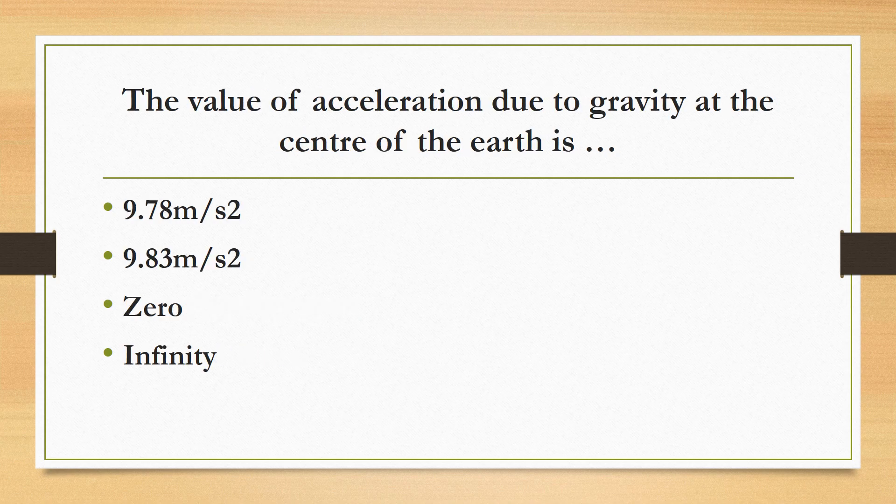The value of acceleration due to gravity at the center of the earth is: 9.78 m/s², 9.83 m/s², 0, or infinity? The correct answer is 0. The value of g is maximum at the poles (9.83 m/s²) and minimum at the equator (9.78 m/s²).